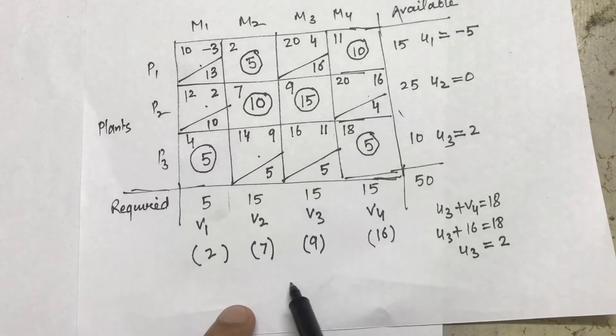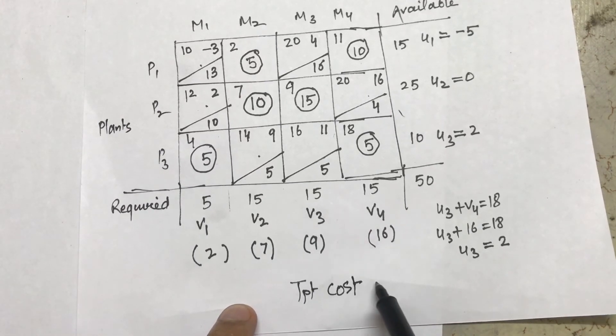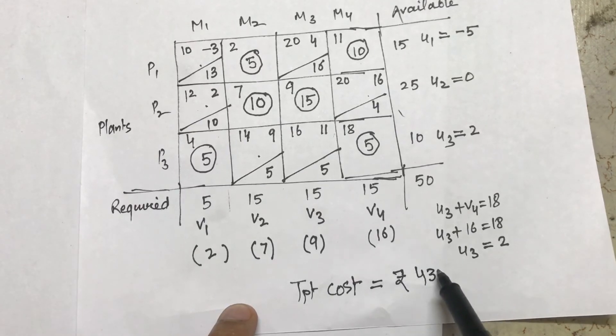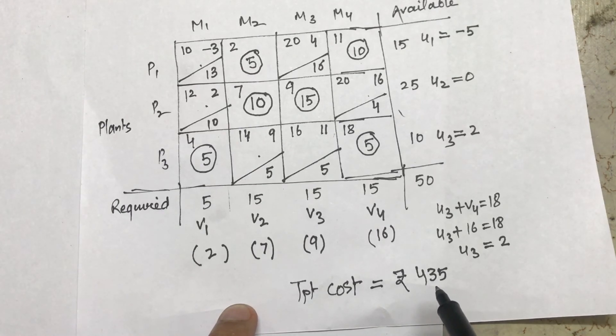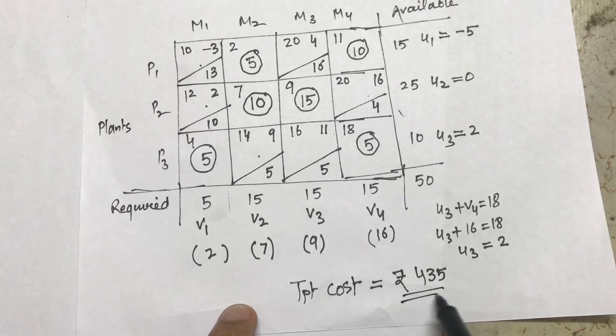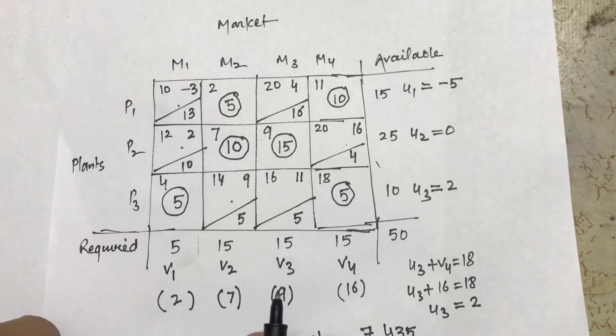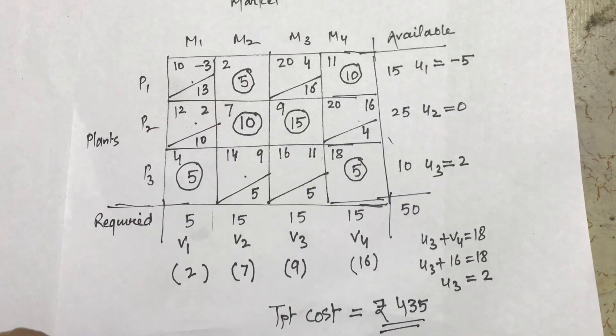Now if I calculate transportation cost from here, as per my calculation it is coming out to be rupees 435, which was initially 475. So basically there is a difference which I have created of 40. So this is the transportation cost and that's how the entire solution can be optimized for a transportation problem. Thank you, post your questions.